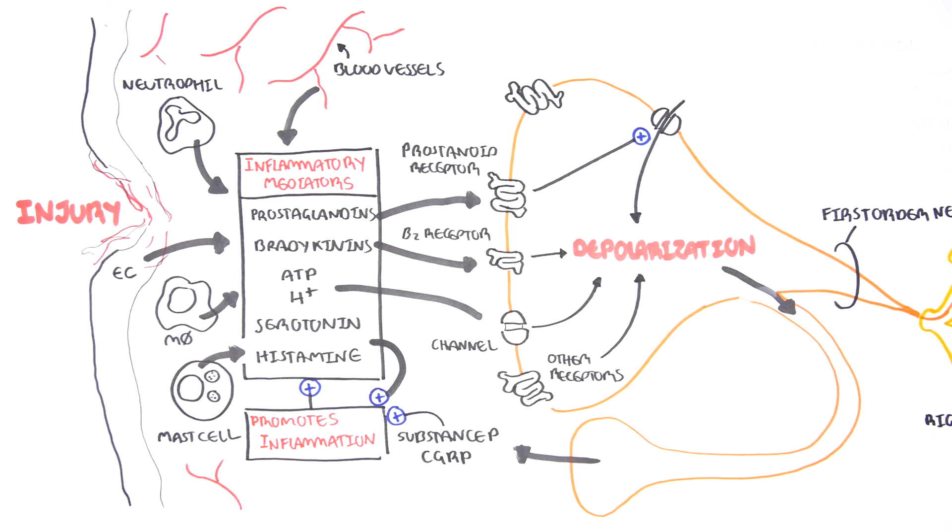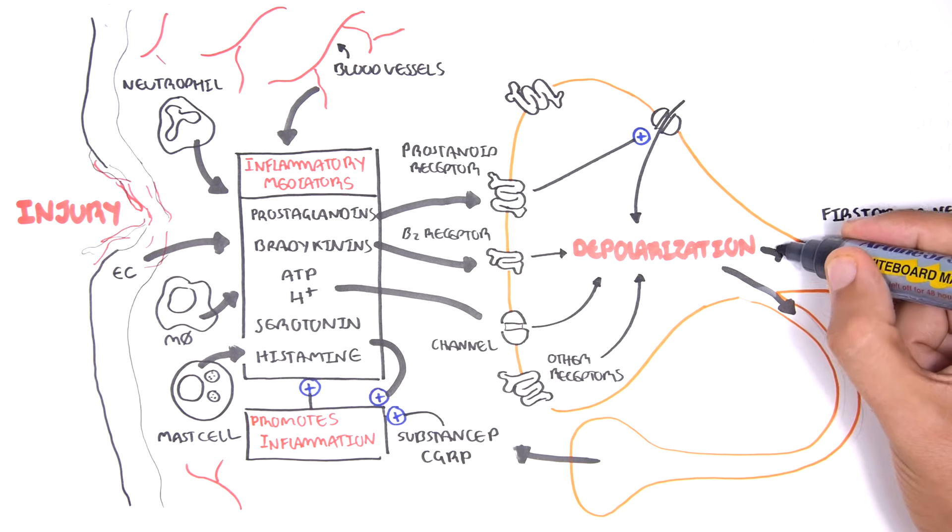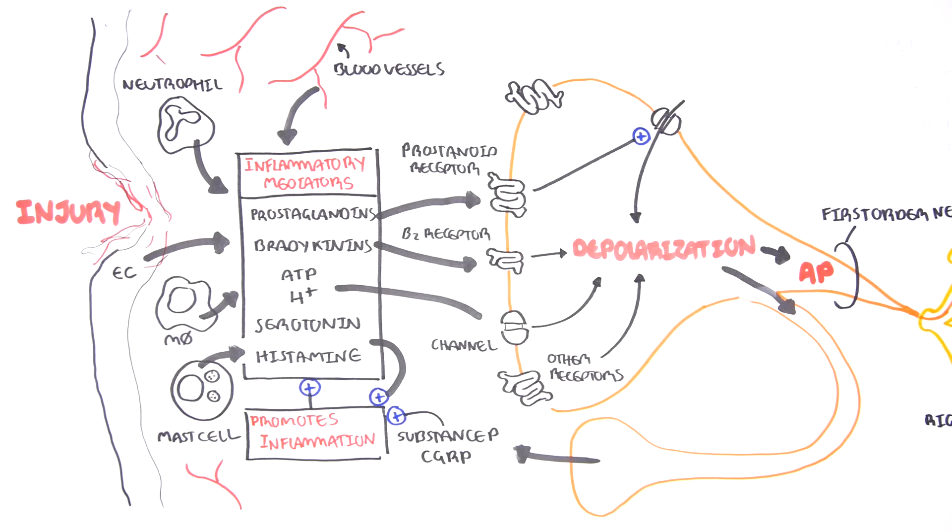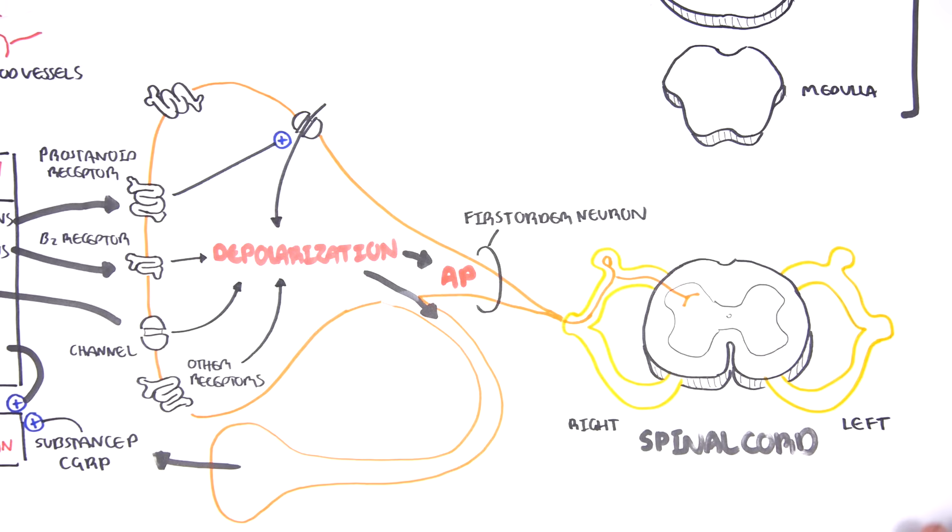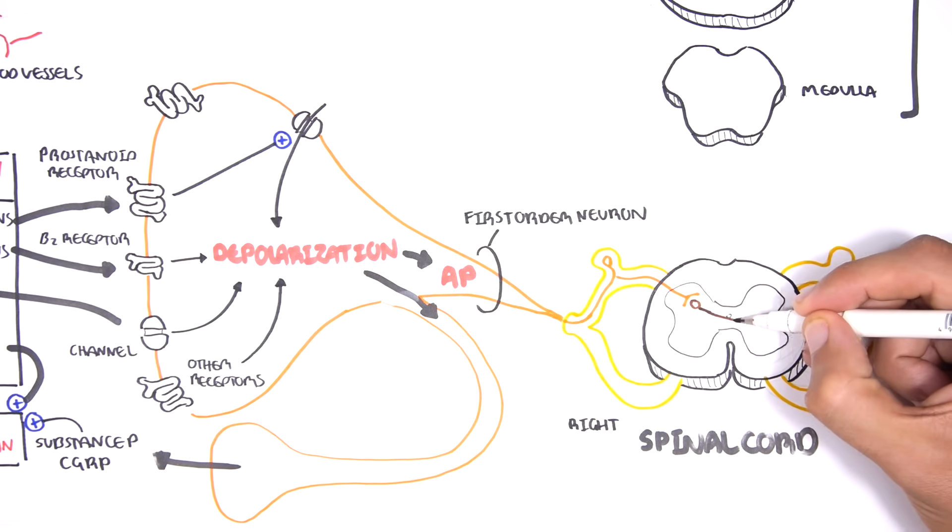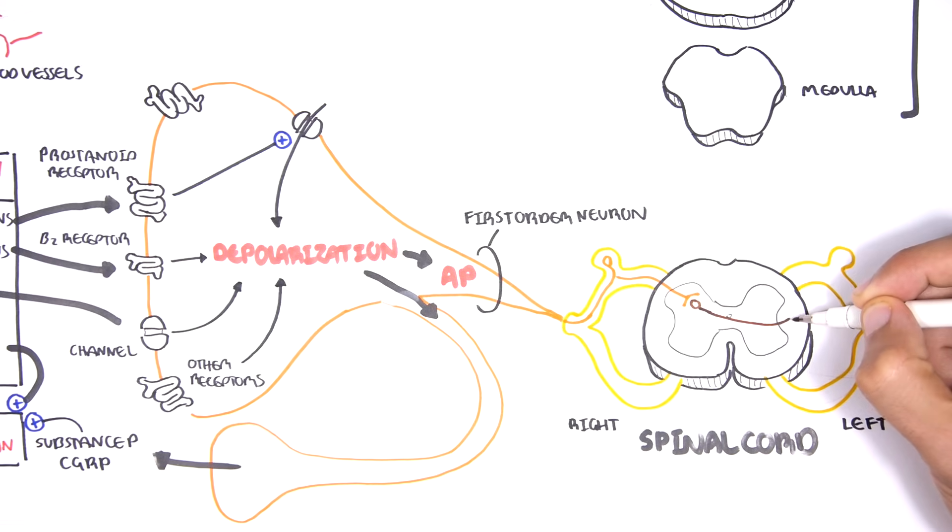Prostaglandin E2 causes depolarization and will thus cause an action potential. This action potential will travel all the way to the back or the dorsal horn of the spinal cord. At the dorsal horn of the spinal cord, the first order neuron will synapse and relay the stimuli to a second neuron.